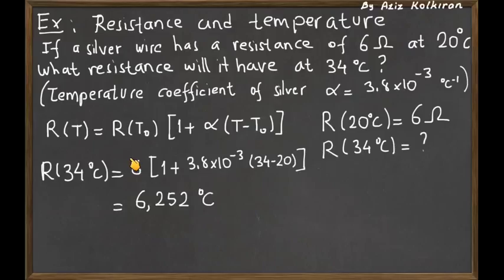The resistance increases for this range of temperature for the silver from 6 ohms to 6.252 ohms. This doesn't seem very much. We can think of why, when the temperature for some conductor increases, why does the resistivity or resistance increase? This can be understood in the macroscopic picture.